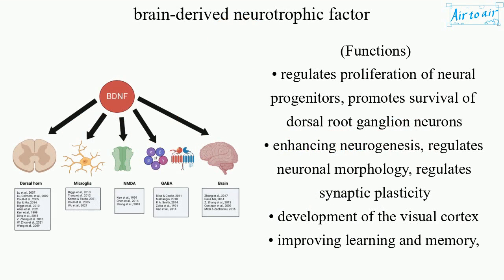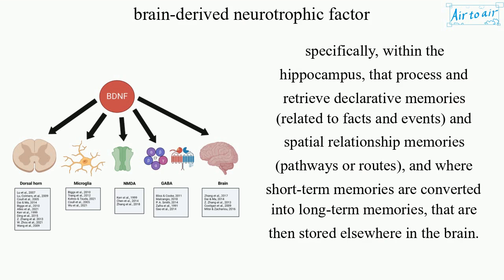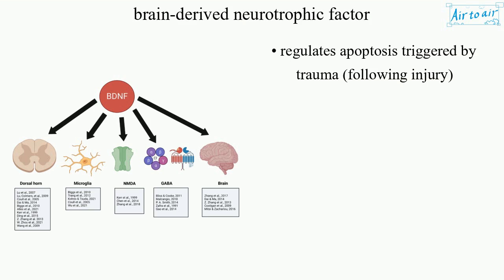Functions: regulates proliferation of neural progenitors, promotes survival of dorsal root ganglion neurons, enhancing neurogenesis, regulates neuronal morphology, regulates synaptic plasticity, development of the visual cortex, improving learning and memory — specifically within the hippocampus — that process and retrieve declarative memories related to facts and events, spatial relationship memories such as pathways or routes, and where short-term memories are converted into long-term memories stored elsewhere in the brain. Also regulates apoptosis triggered by trauma following injury.